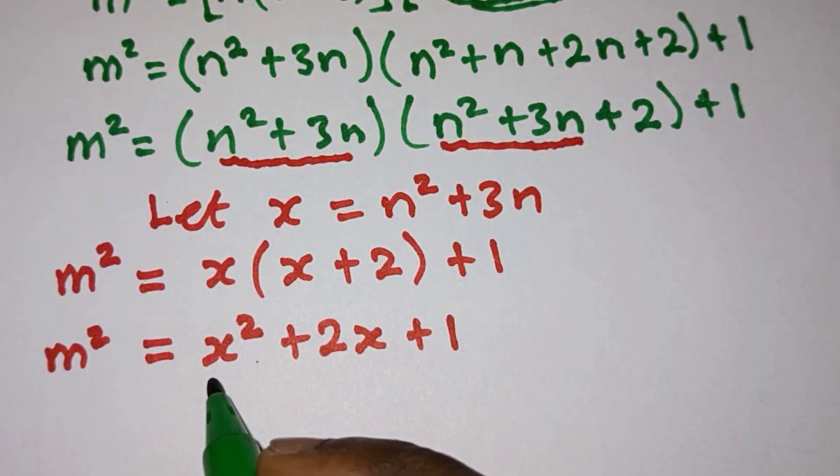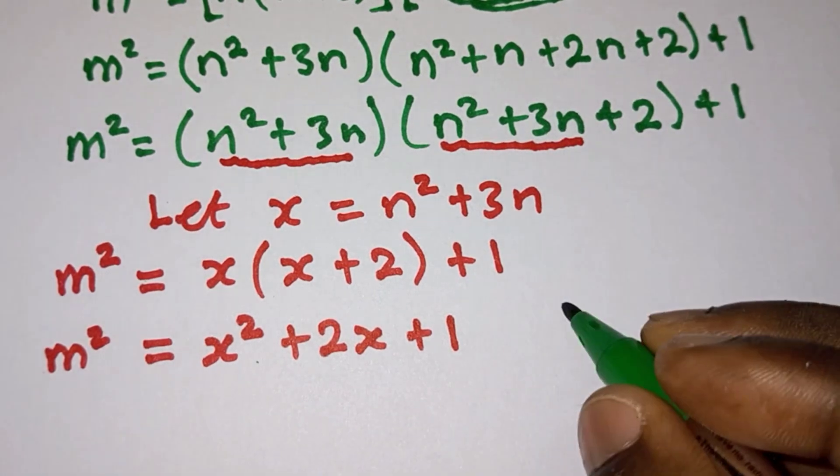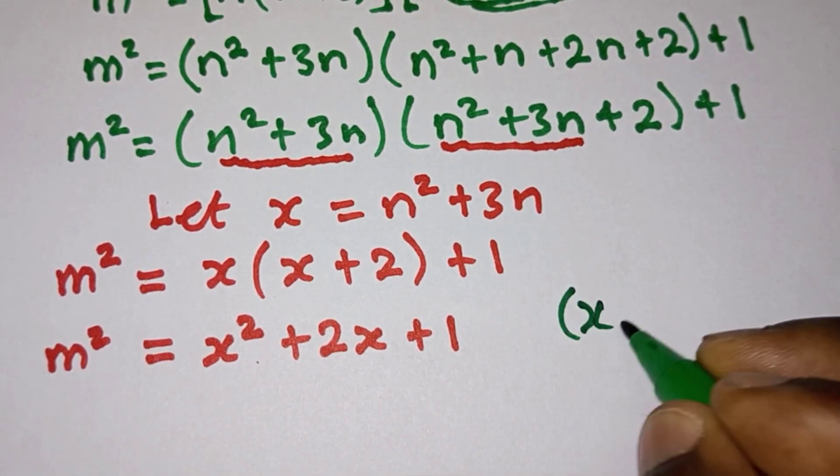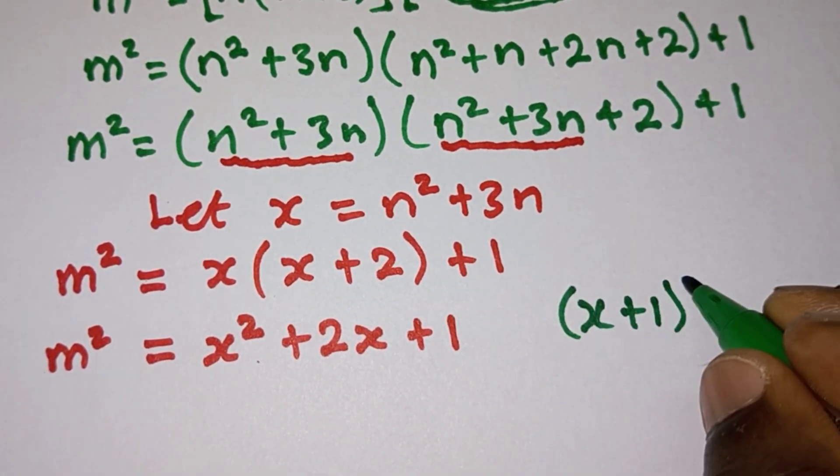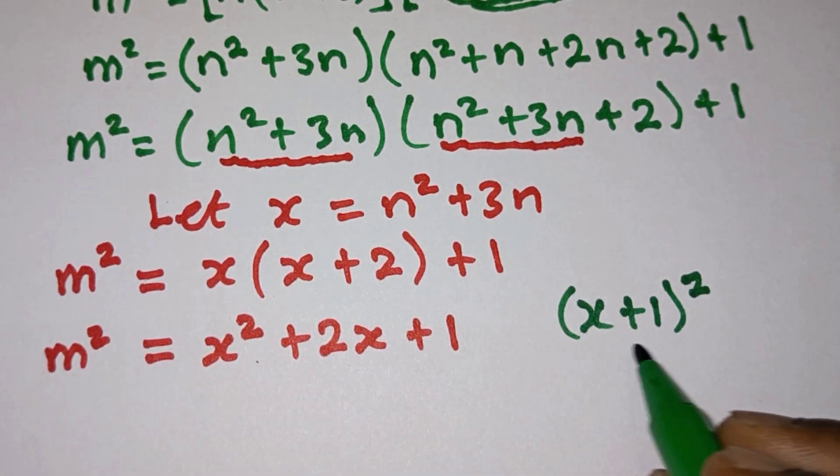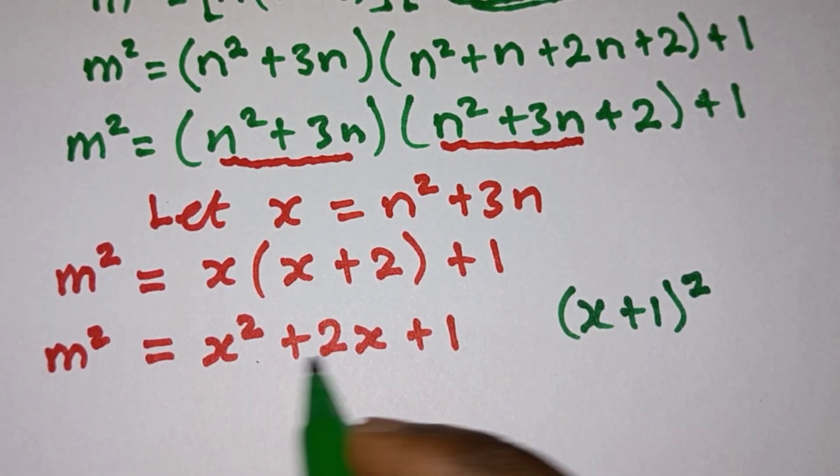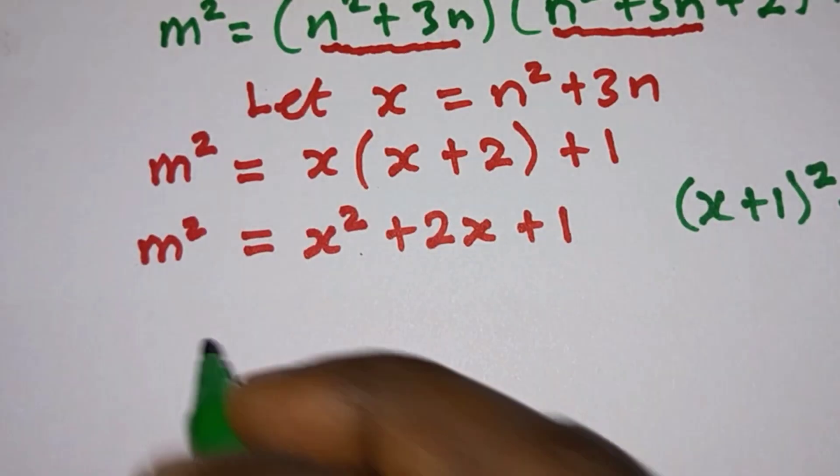Now we can distribute this one. We have m² = x² + 2x + 1. We can represent this by something, right? If we expand something like (x+1)², if you have this one and you expand it, you are going to get this.